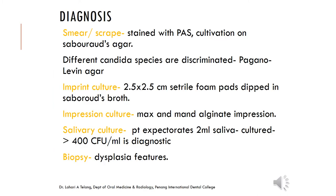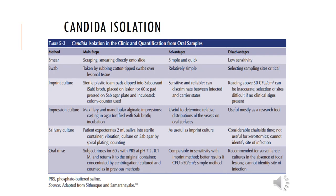The diagnosis of oral candidiasis can be done by various methods; generally the organism must be cultured for a specific diagnosis. Methods include smear or scrape, imprint impression cultures, salivary culture, or biopsy if dysplasia is suspected. This chart from Burkitt's discusses each step and the advantages and disadvantages of performing it in your clinic — many can be done chairside while some need to be sent to the lab.